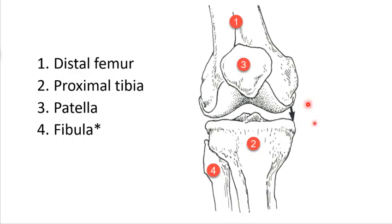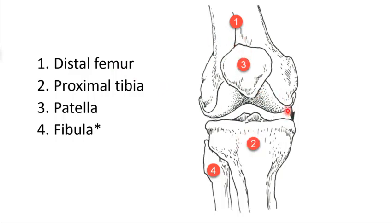Looking at the knee joint, it is the articulation between the tibia — the proximal tibia and the distal femur. It includes the patella, so the patella-femoral relationship. The fibula, although not directly part of the knee, has quite a bit of musculature that is an anchor point that can affect knee function. So it's really the relationship between these four bones, but really the relationship between the femur and the tibia.